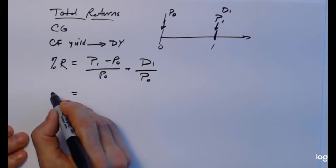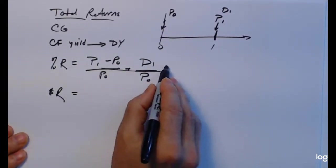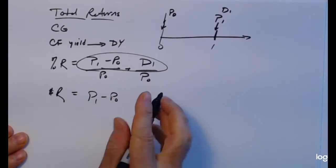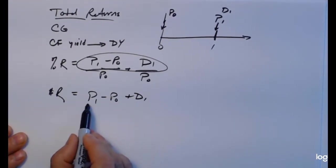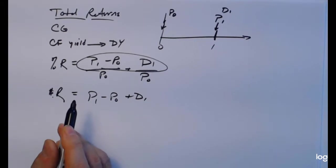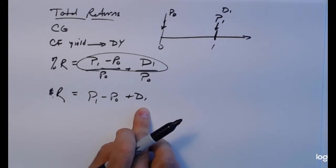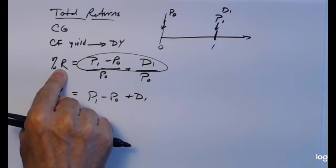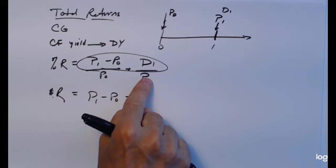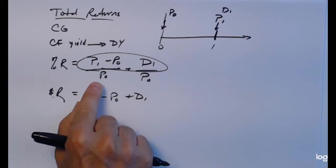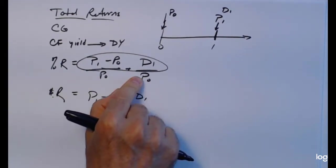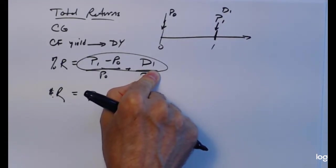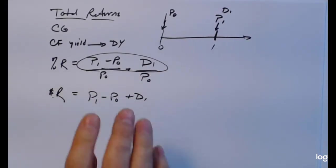If you want to measure returns in dollars, it's the numerator of the fraction: P₁ − P₀ gives your capital gain or loss, plus dividend income — that's the appreciation in dollars. But more often in this course we look at percentage returns, because they're automatically adjusted for the scale of the investment. That way we can compare all sorts of investments of unequal size.